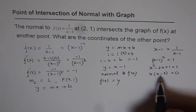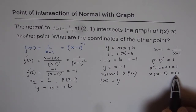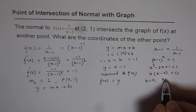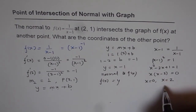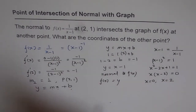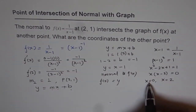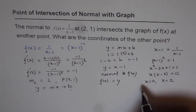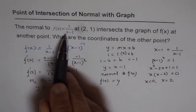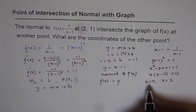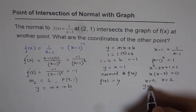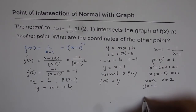This simplifies to x squared minus 2x equals 0, which can be factored as x(x minus 2) equals 0. This equation is satisfied at two points: x equals 0 and x equals 2. We already know that the normal passes through x equals 2, so the other point is x equals 0. When x equals 0, the y value is 0 minus 1, which is minus 1.